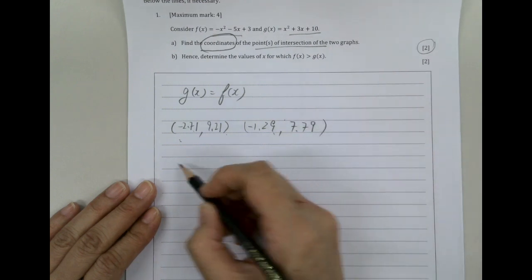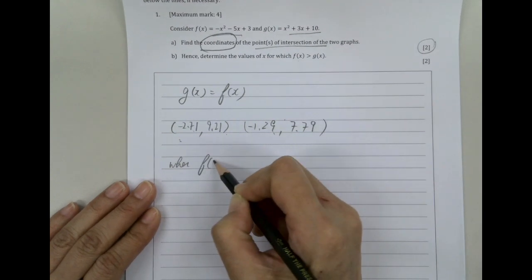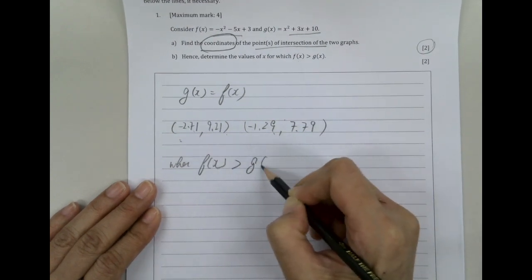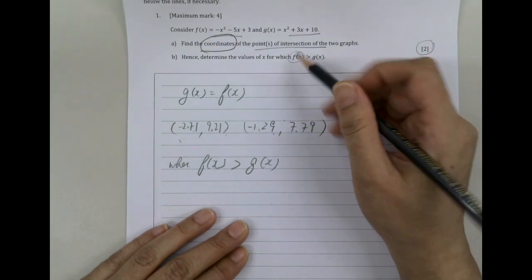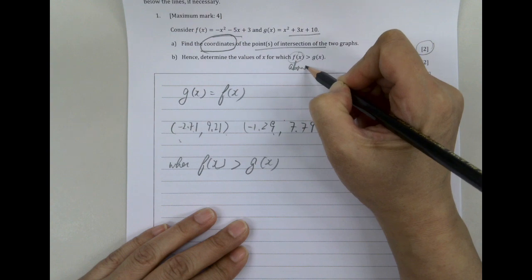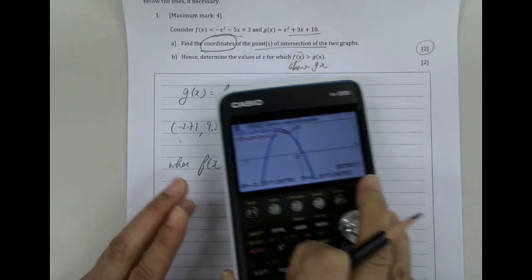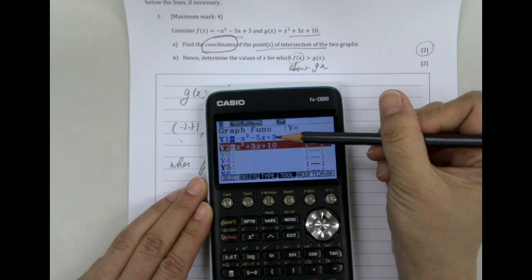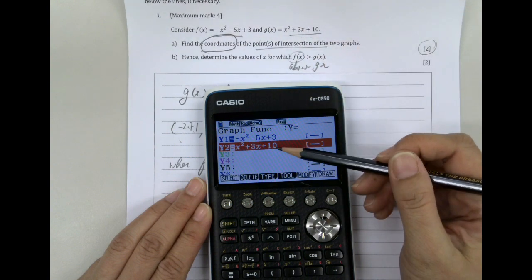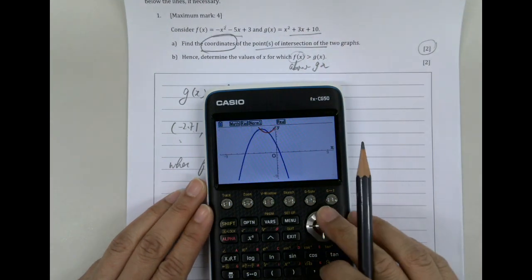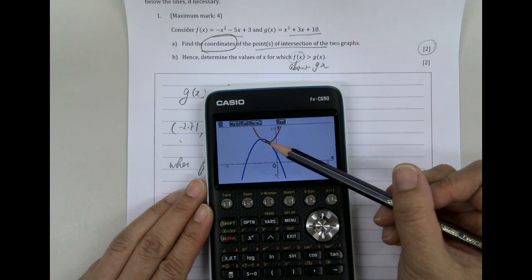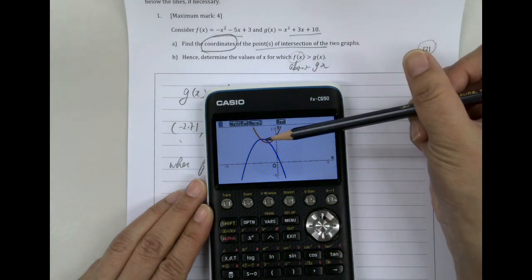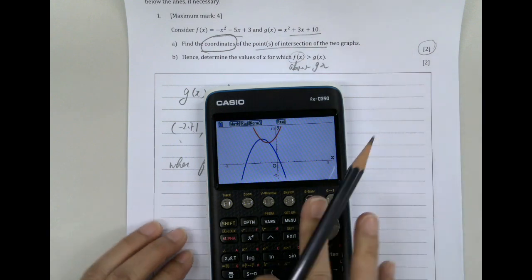Alright, determine when fx is bigger than gx, which means that the line fx is above gx. So we look back to our equation. Our blue line is fx, red line is gx. So if you go up there, zoom in a bit, you can see that this is the only time when the blue is bigger than the red.